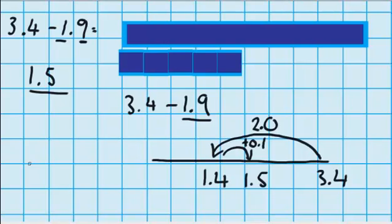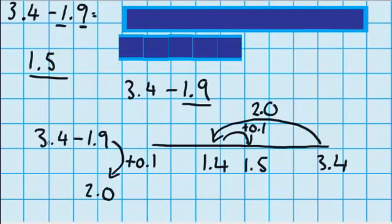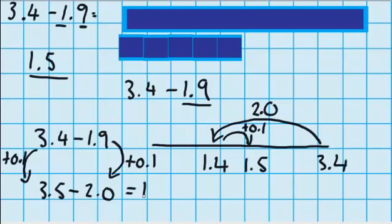Let's try another strategy: 3.4 minus 1.9. This time I want to make 1.9 into 2, because taking away 2 is going to be much easier. To do that I'm going to make that side 1 tenth bigger. Remember in subtraction I'm trying to find the distance between two numbers, so if I make this side 1 tenth bigger, to keep that gap the same I also have to make this side 1 tenth bigger. So 3.4 plus 0.1 equals 3.5, and now 3.5 minus 2 equals 1.5.